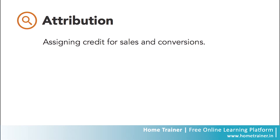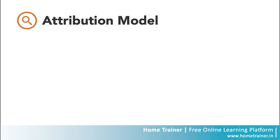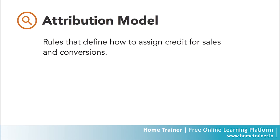Along with attribution, we have the attribution model, and this is a rule or set of rules that determines how credit for sales or conversions are assigned to each touch point in a user's journey.